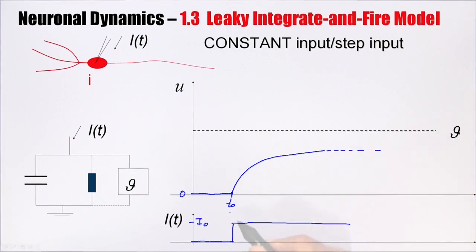Now let's take a bigger value of the input current, in which case the trajectory may look like this, and then it would converge to a new stationary value.